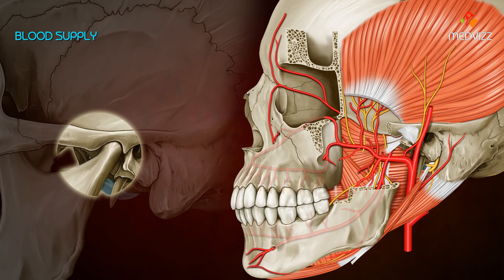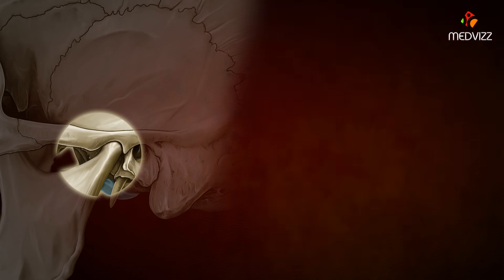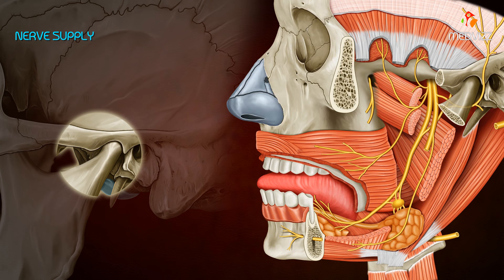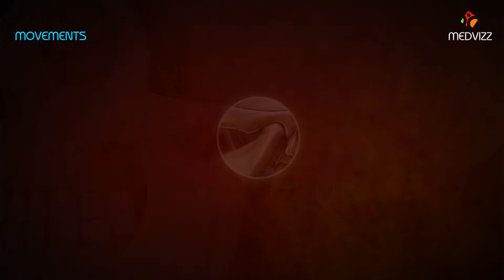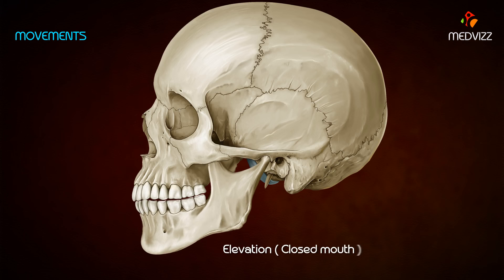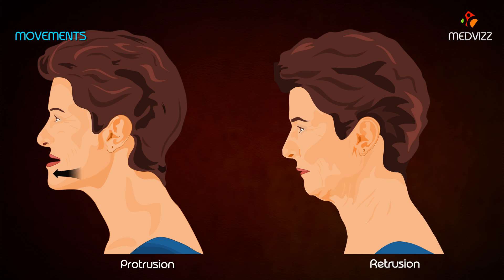The vascular supply of the temporomandibular joint is from branches of the superficial temporal and maxillary arteries. The nerve supply is mainly by the auriculotemporal nerve and the masseteric nerve. The movements of the temporomandibular joint are depression, elevation, protrusion, and retrusion.